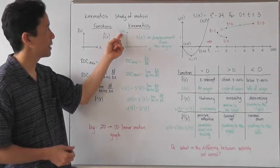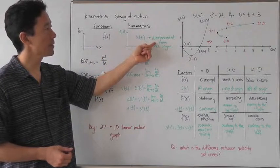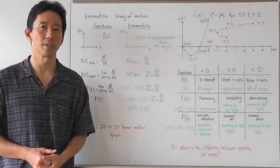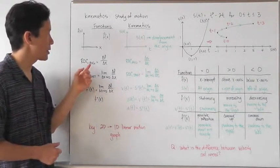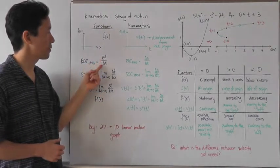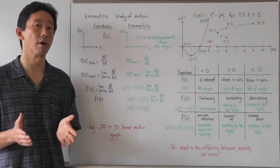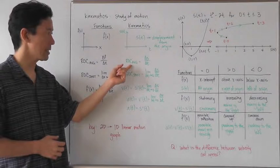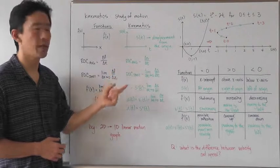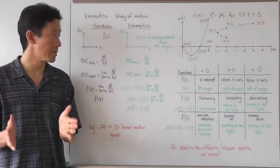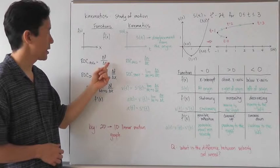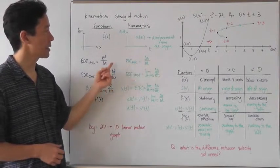And then we're going to have s of t, which is going to be the amount of displacement from the origin. So s of t is going to be our displacement function. When we talk about the average rate of change in functions, we took a look at the change in f over the change in x over a particular interval on the domain. Notice it's exactly the same thing for kinematics — we looked at a particular interval of time and took the change of displacement over the change in time. The only difference is that our variables are different.